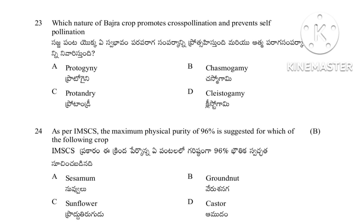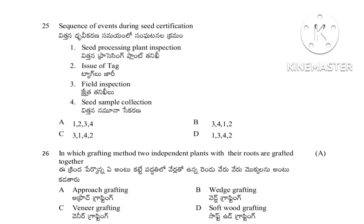Question 24: As per IMSCS — Indian Minimum Standards for Seed Certification — maximum physical purity of 96% is suggested for which crop — sesame, groundnut, sunflower, or castor. The answer is groundnut. Question 25: Correct sequence of events during seed certification — the correct answer is C: first field inspection, then seed processing plant inspection, then seed sample collection, then issue of tag.